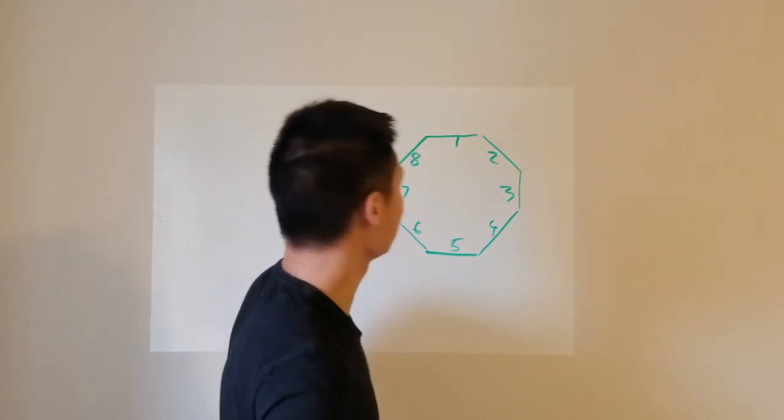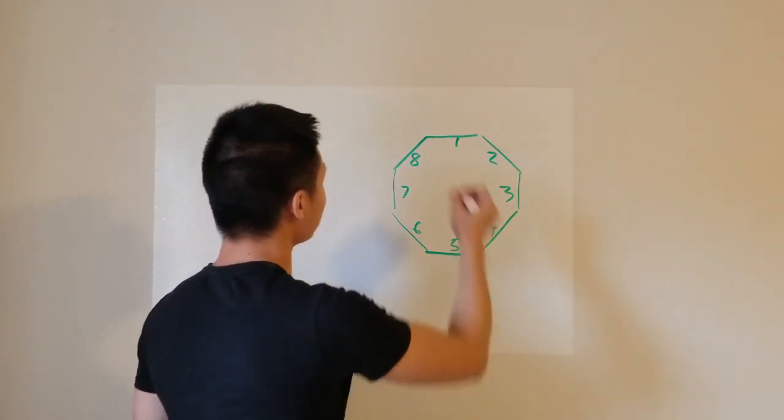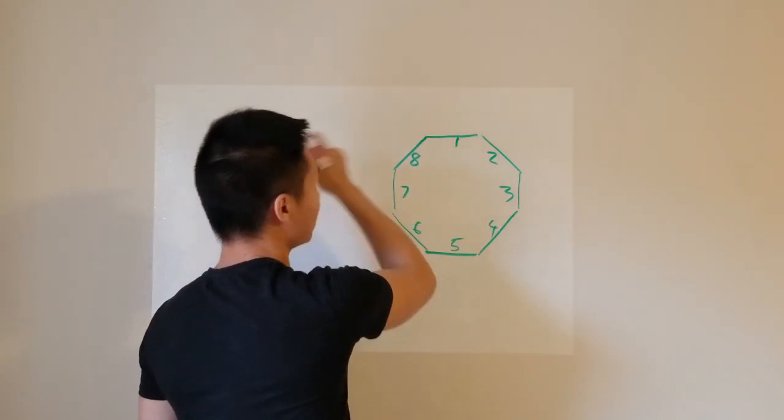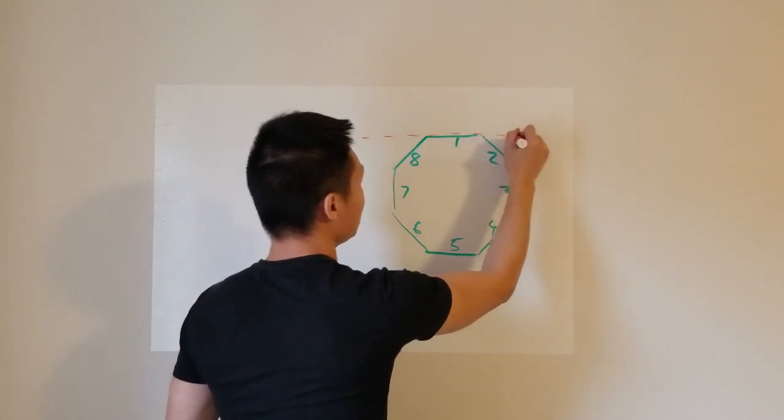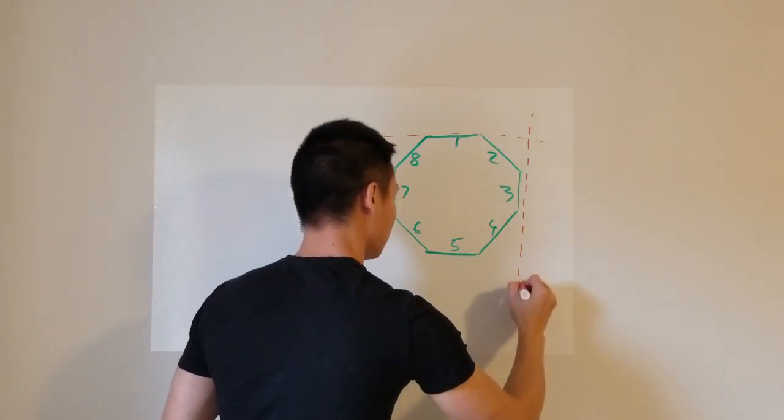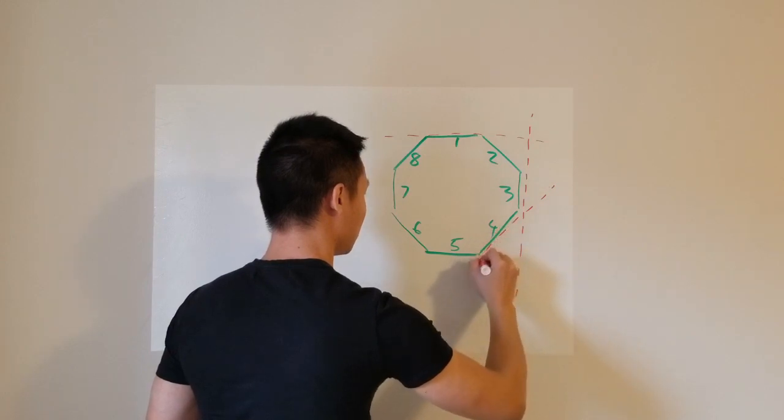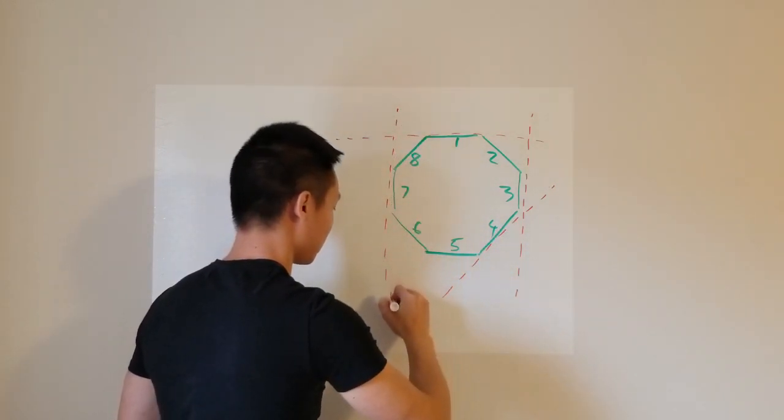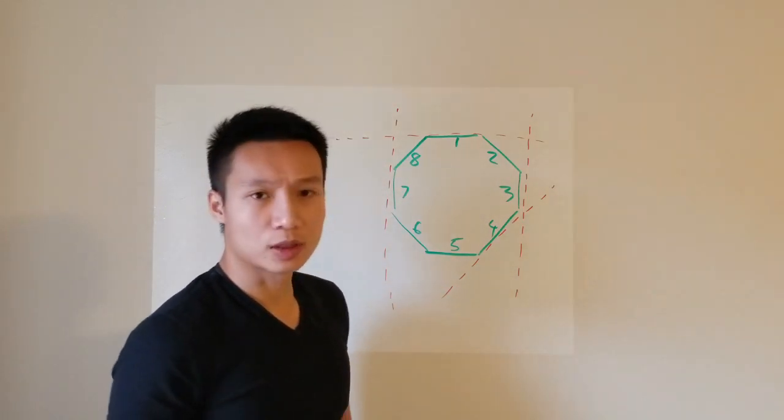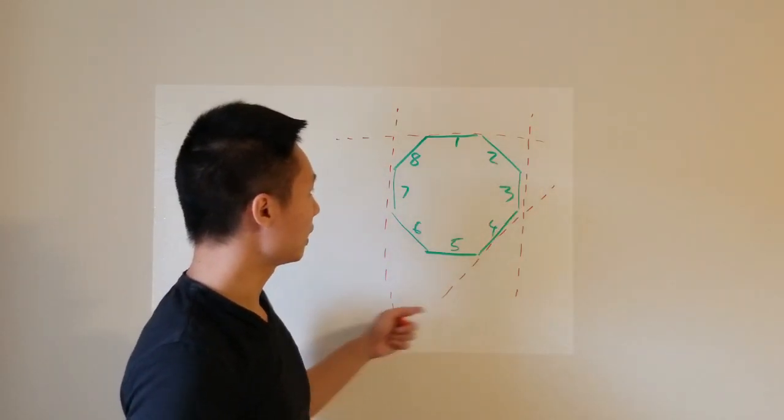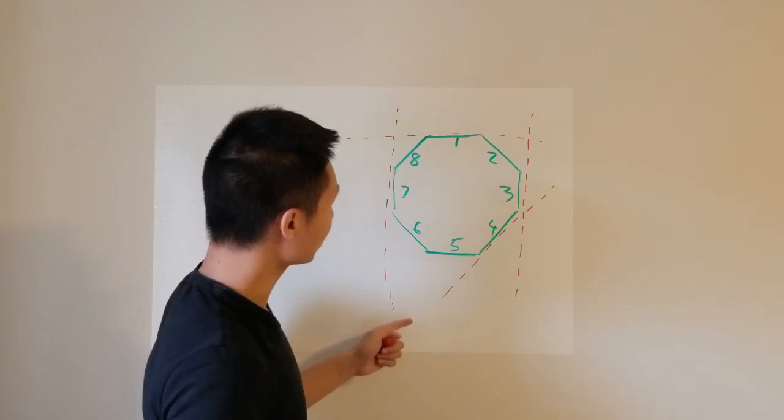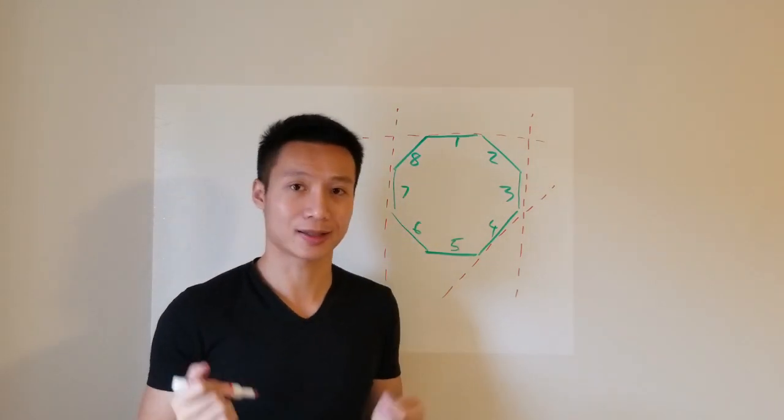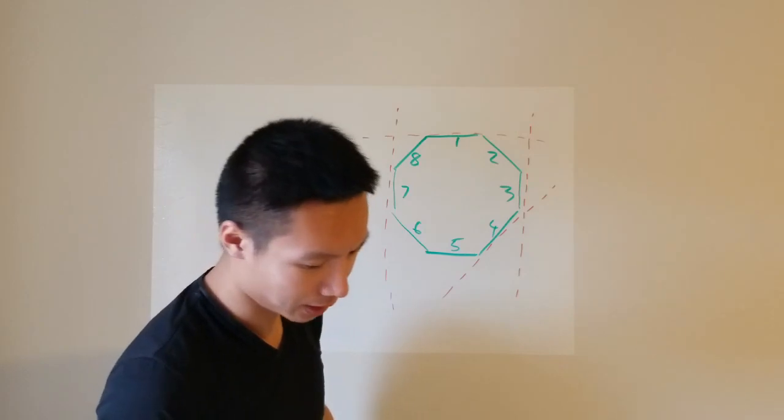I'm going to choose 4 sides at random. Say I chose number 1, number 3, number 4, and say I chose number 7. So in this case, the 4 sides do enclose to form a shape that contains this octagon. So let's call this a success, it is what we want to happen.